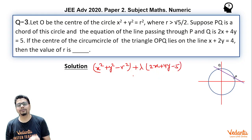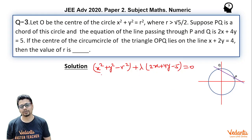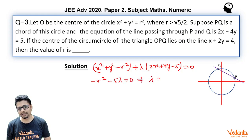I am looking for that circle which is not just passing through the points P and Q but also passing through the center of the circle x² + y² = r², and the center is clearly origin. So (0,0) should satisfy this equation. I will put x = 0 and y = 0 and I get -r² - 5λ = 0. This essentially means λ = -r²/5.